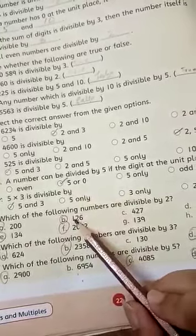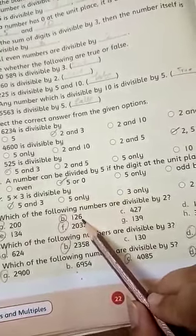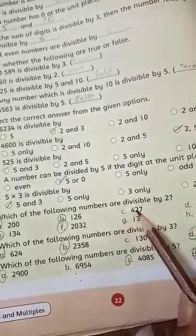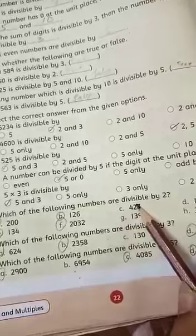B. 126. Yes, it is also divisible by 2. 427. No, it will not be divisible by 2 because we have 7 at unit place value.